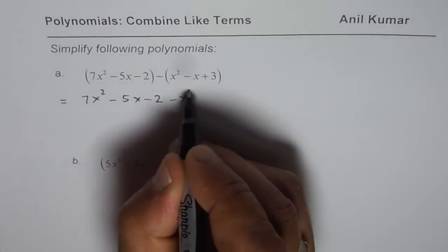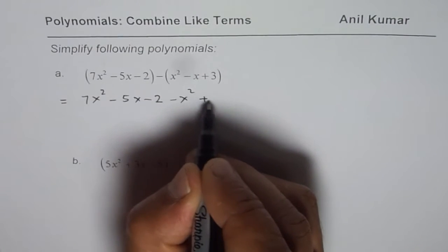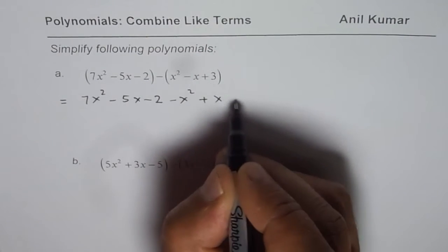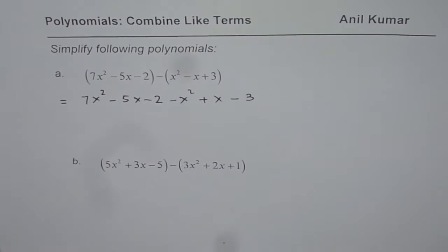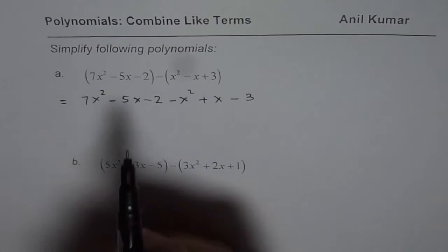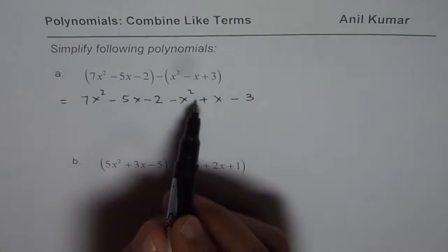So this becomes minus x squared, minus minus is positive, so plus x, minus times plus is negative, minus 3. So now you get a polynomial with 6 terms. Let's combine the like terms.